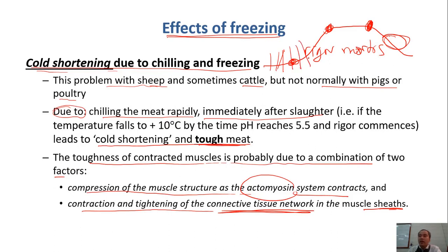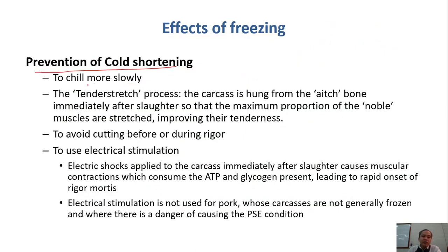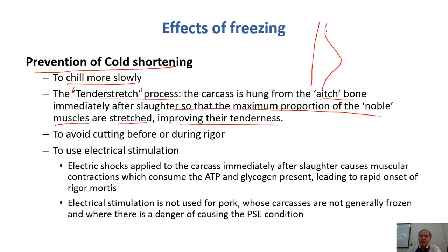To prevent cold shortening, we can chill more slowly, or we can apply a tender stretch process. In the tender stretch process, the carcass is hung from the edge bone immediately after slaughter so that the maximum proportion of normal muscles are stretched, improving their tenderness. Instead of hanging here in the usual position, people now suggest hanging from a different point so that the muscles are more relaxed and stretched.